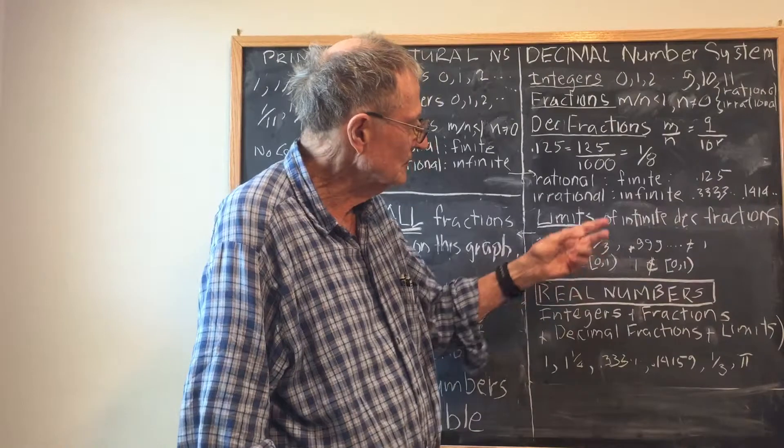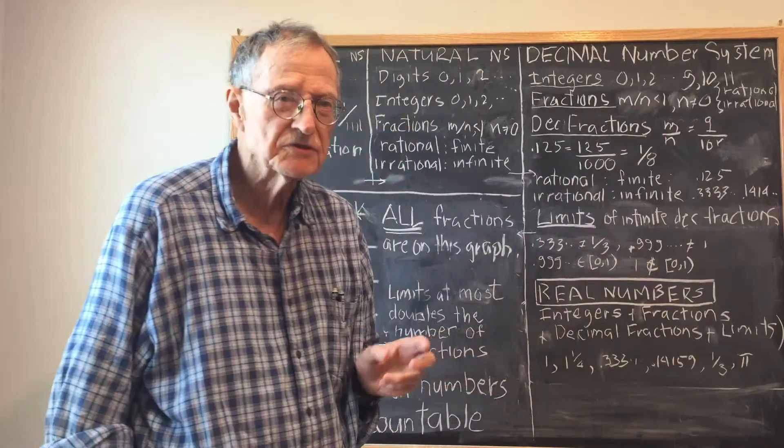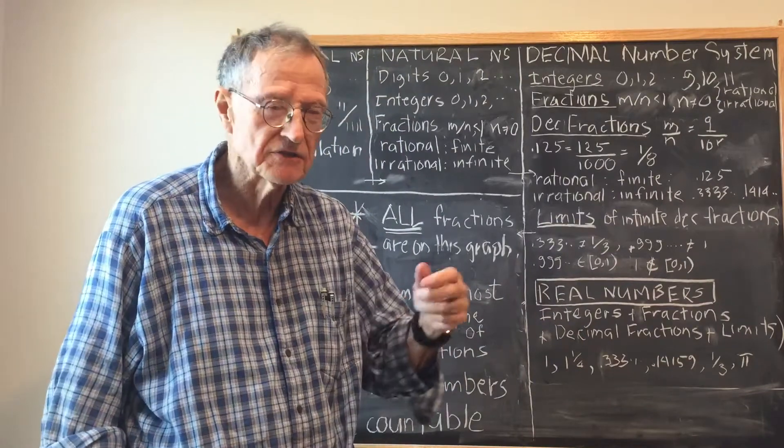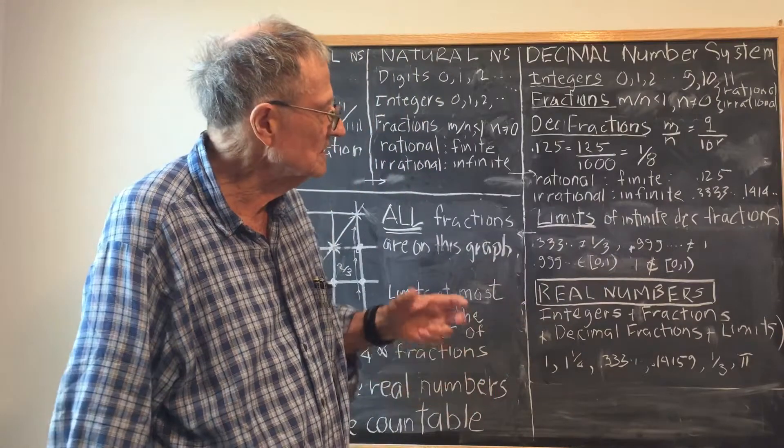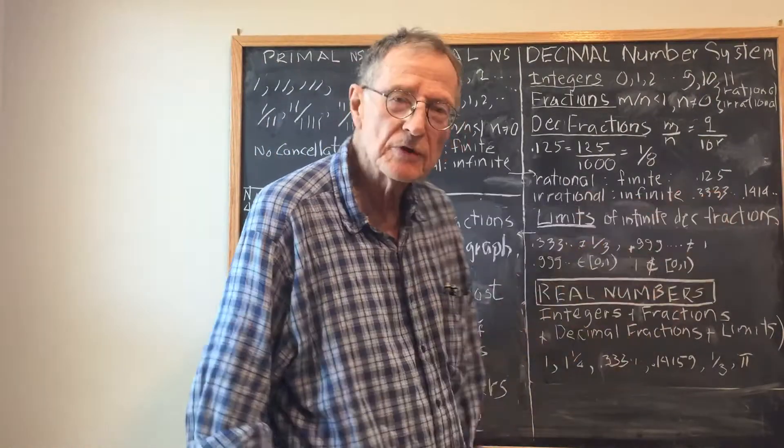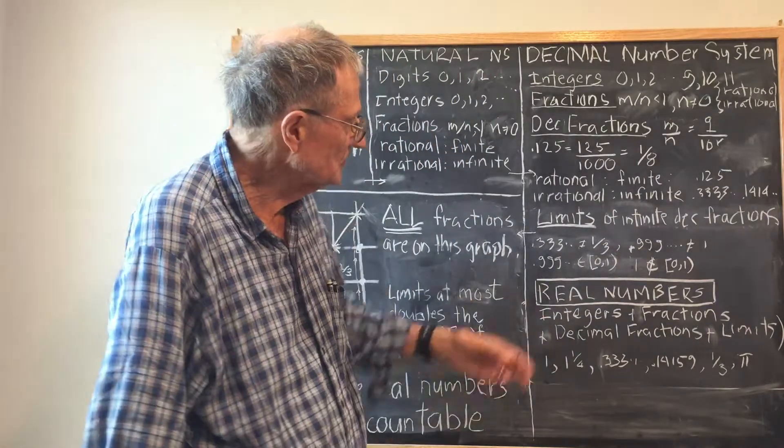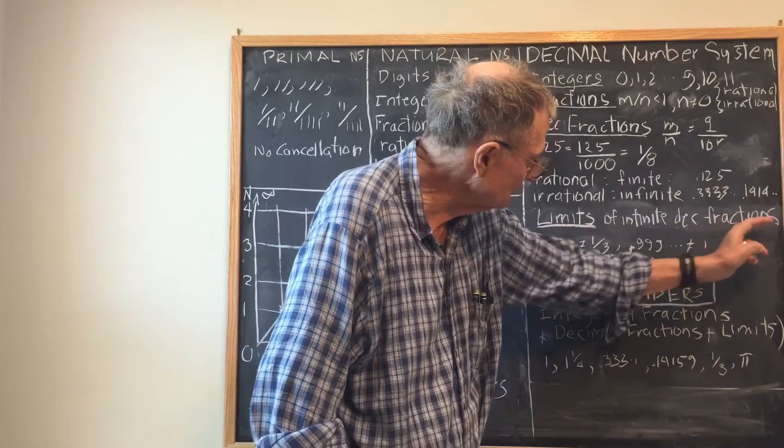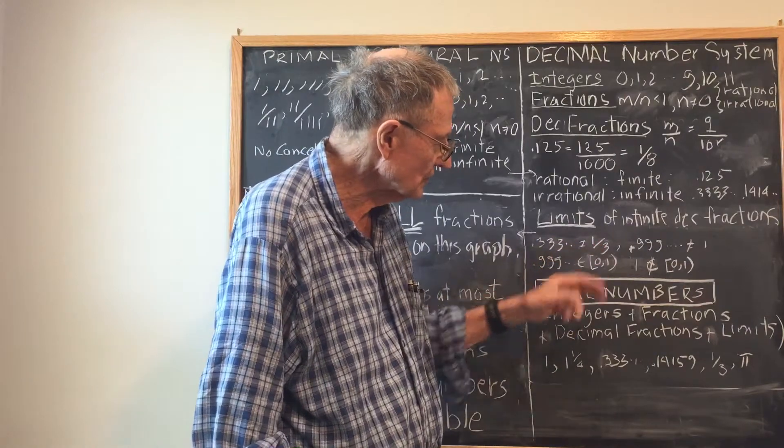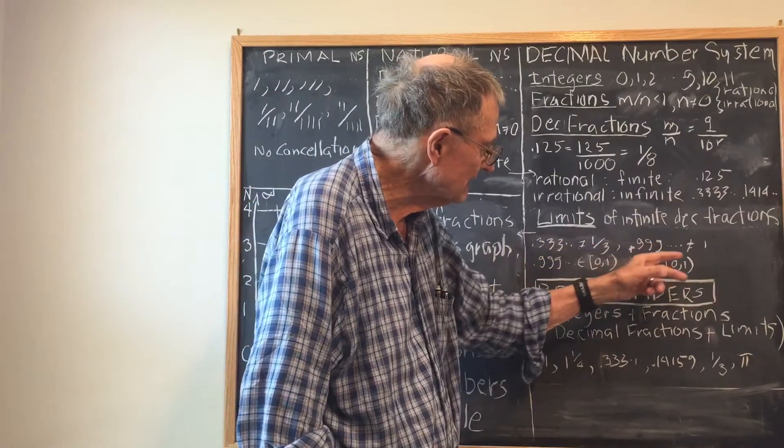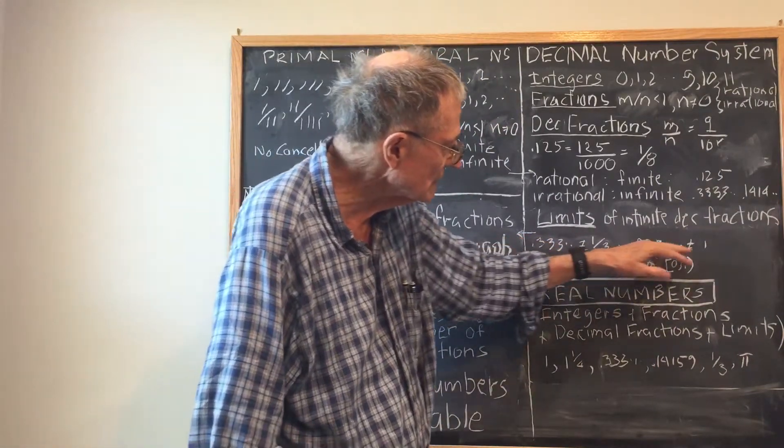The irrational ones generally are those fractions which can't be expressed as a finite ratio of integers. In order to deal with infinite irrational fractions, we introduce the concept of the limit of an infinite decimal fraction. For example, 0.333 is never equal to one third, and 0.999 is never equal to one, no matter how many digits you use.